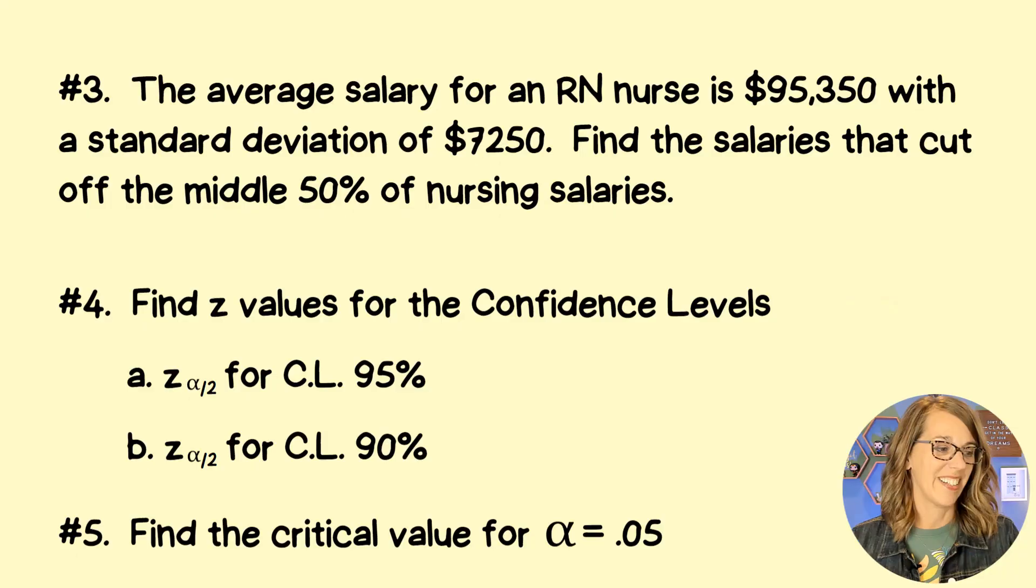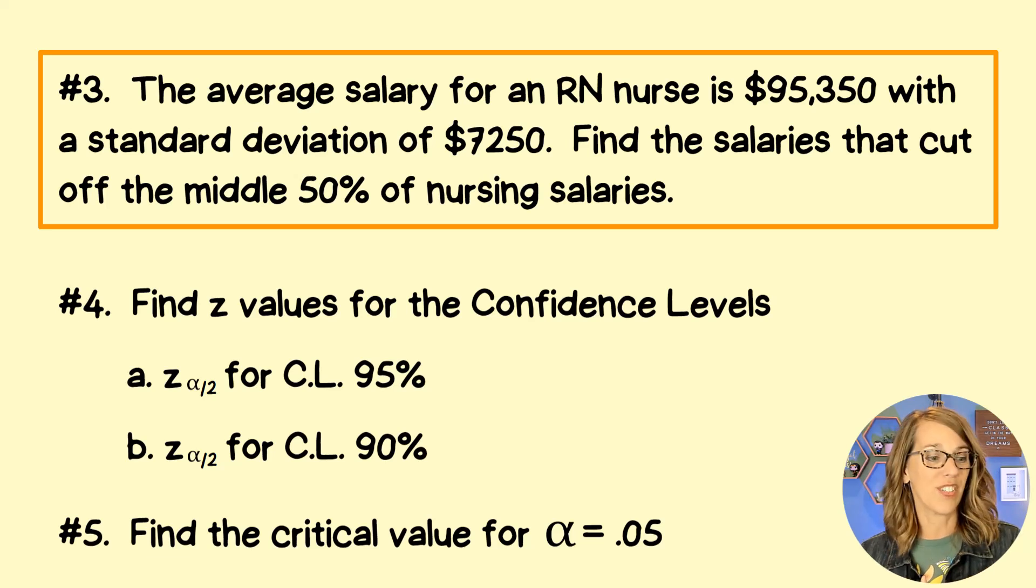Next, we've got number three. Number three is going to get us off of that standard normal curve with a mean of zero and a standard deviation of one. Number three says that the average salary for a registered nurse is $95,350 with a standard deviation of $7,250. Okay, so we're given our mean and our standard deviation.